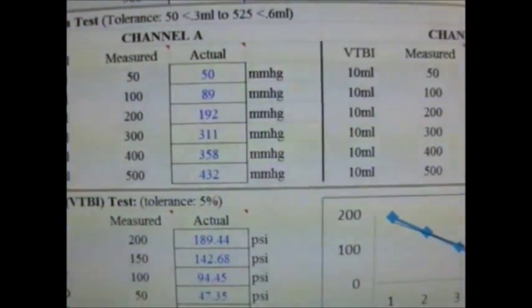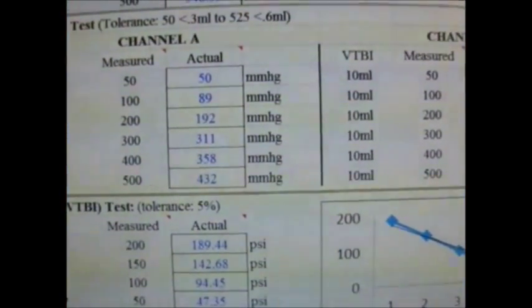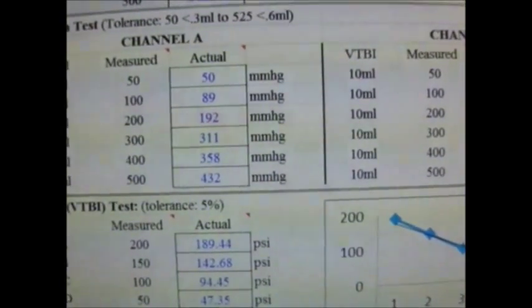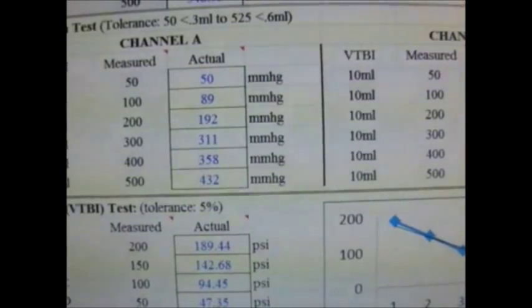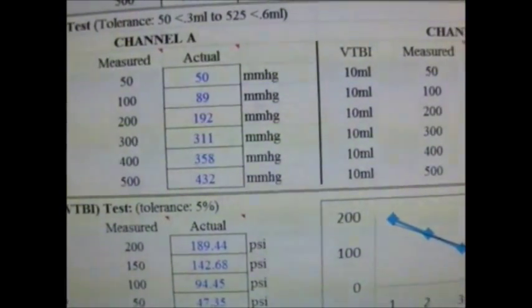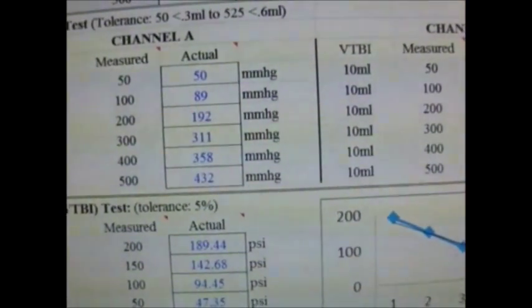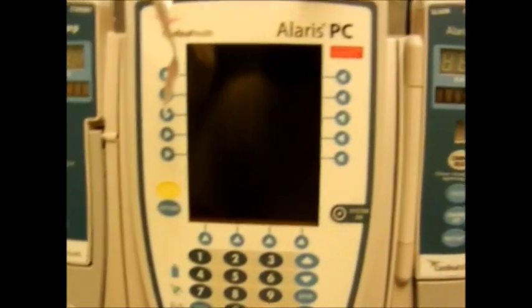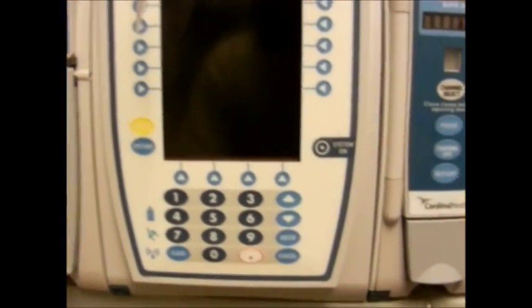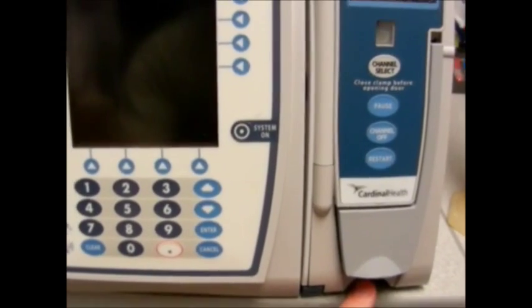Downstream occlusion, or the patient side occlusion, is the obstruction in the direction between the pump and the patient being administered the medication. Here is our infusion pump. This is our patient side occlusion, following it down and into the patient.